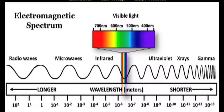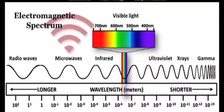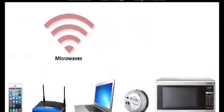Radio waves are long waves that have a low frequency. Microwaves are shorter waves with a higher frequency than radio waves. And as we keep moving up the electromagnetic spectrum, the waves keep getting shorter and the frequencies higher. The spectrum I'll be discussing in this lecture are man-made microwaves — that's the range of frequencies that cell phones, Wi-Fi, and smart meters emit, along with your microwave ovens.